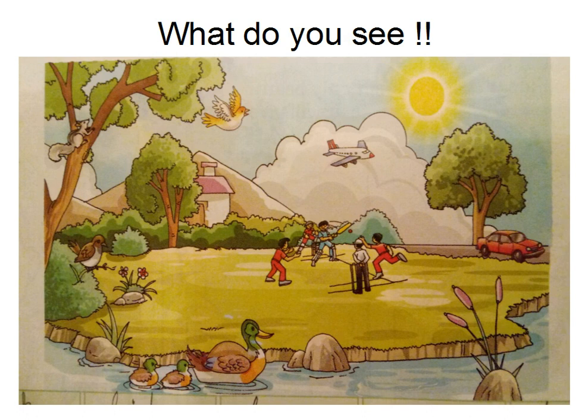You can also see a house nearby and an aeroplane flying above them. You can see a river and a mountain. You can see trees, plants, cars, sun, birds, and water.